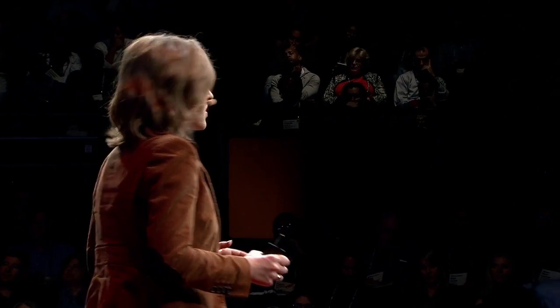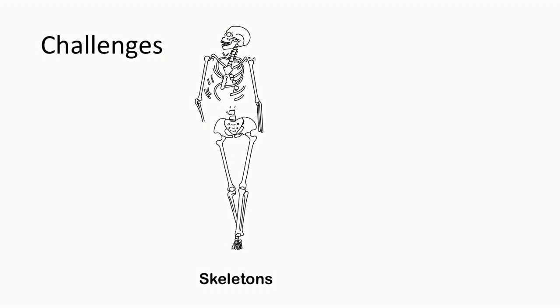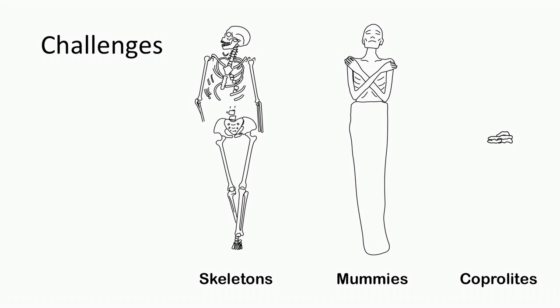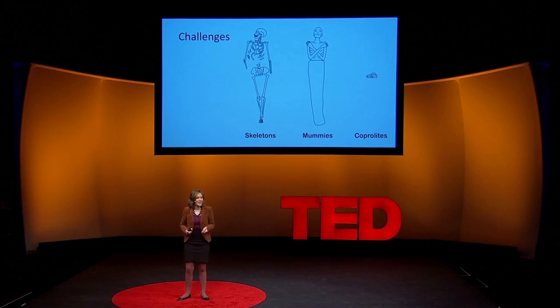But there are a lot of challenges for this. And first of all, what do we even study? Skeletons are ubiquitous. They're found all over the place. But of course, all of the soft tissue has decomposed. And the skeleton itself has limited health information. Mummies are a great source of information, except that they're really geographically limited and limited in time as well. Coprolites are fossilized human feces, and they are actually extremely interesting. You can learn a lot about ancient diet and intestinal disease, but they are very rare.